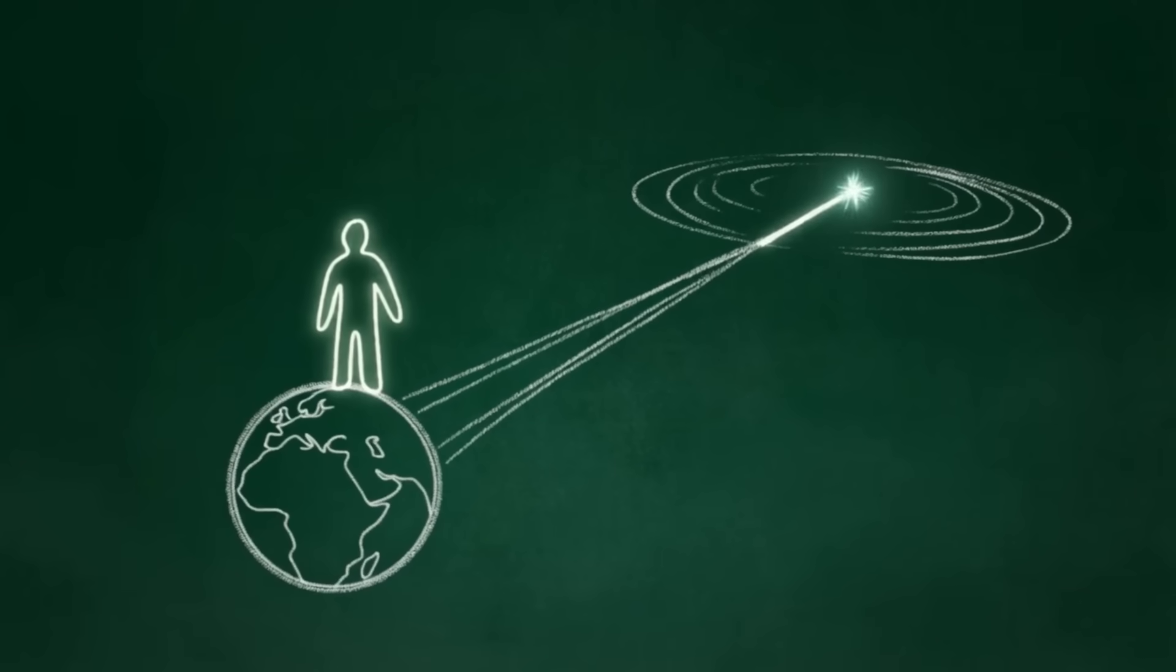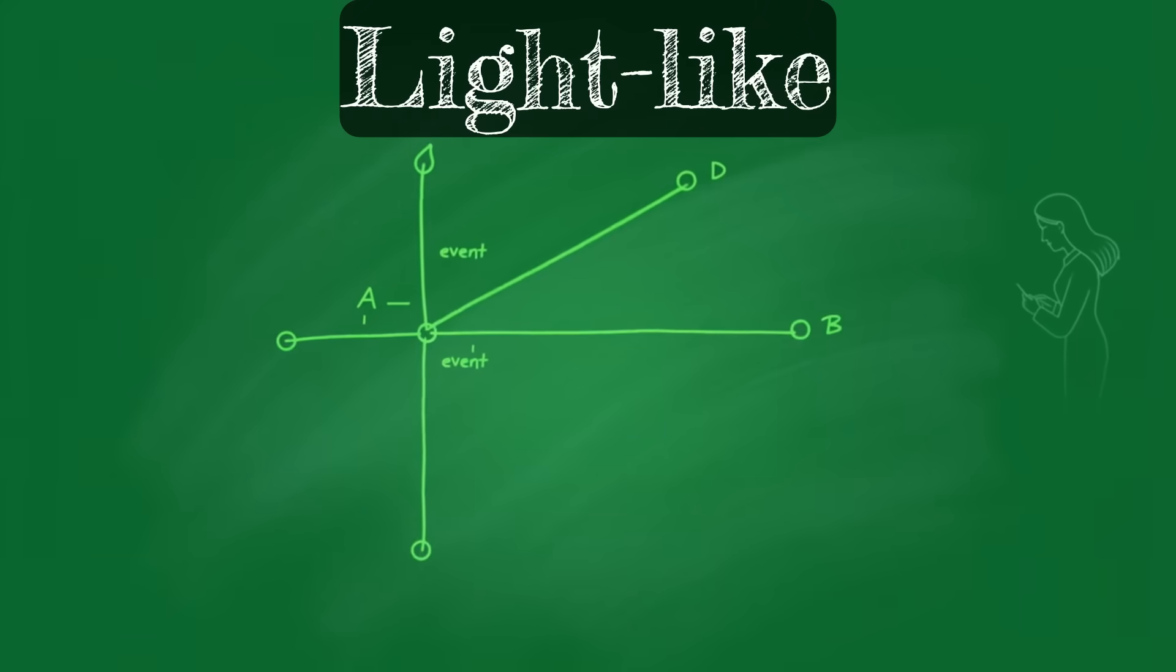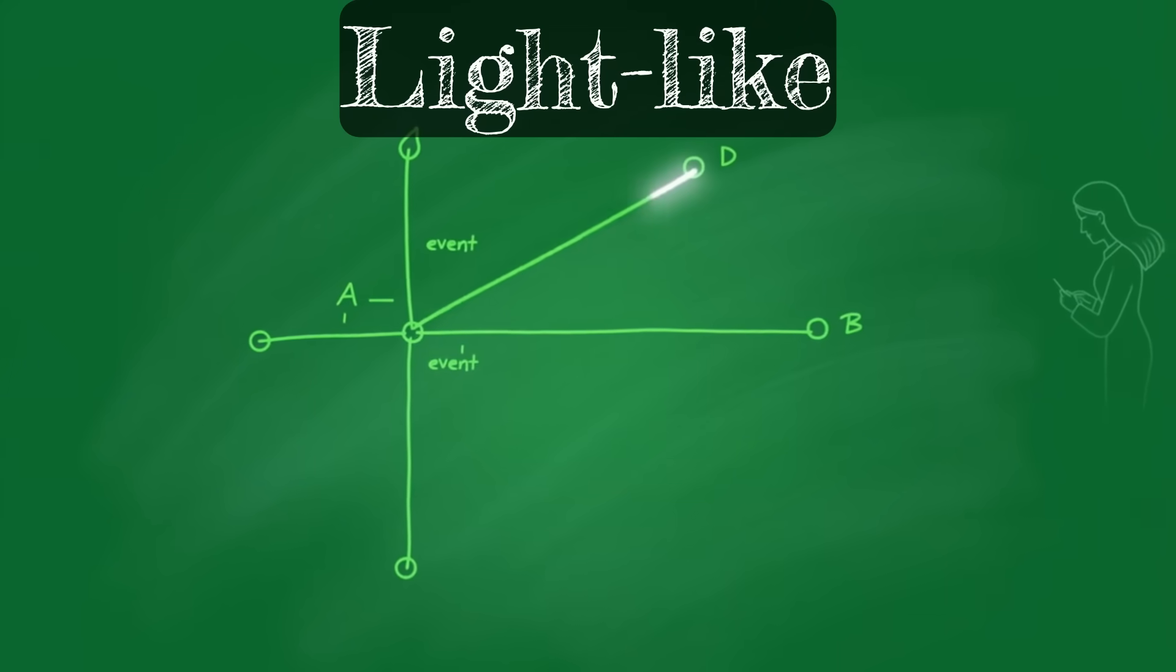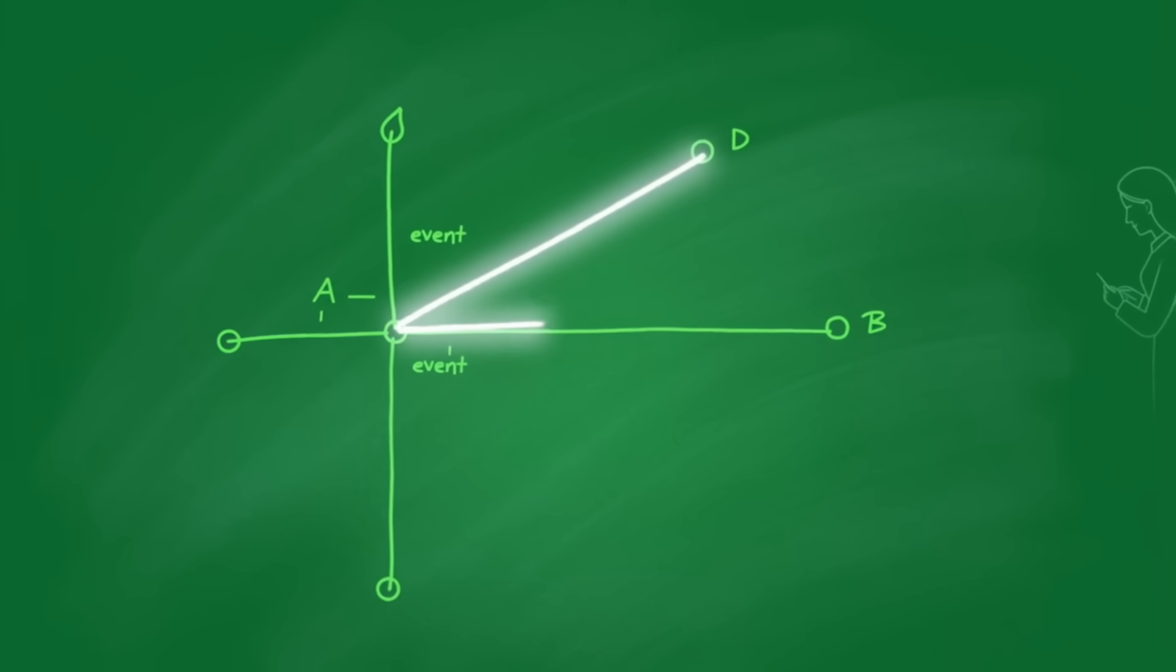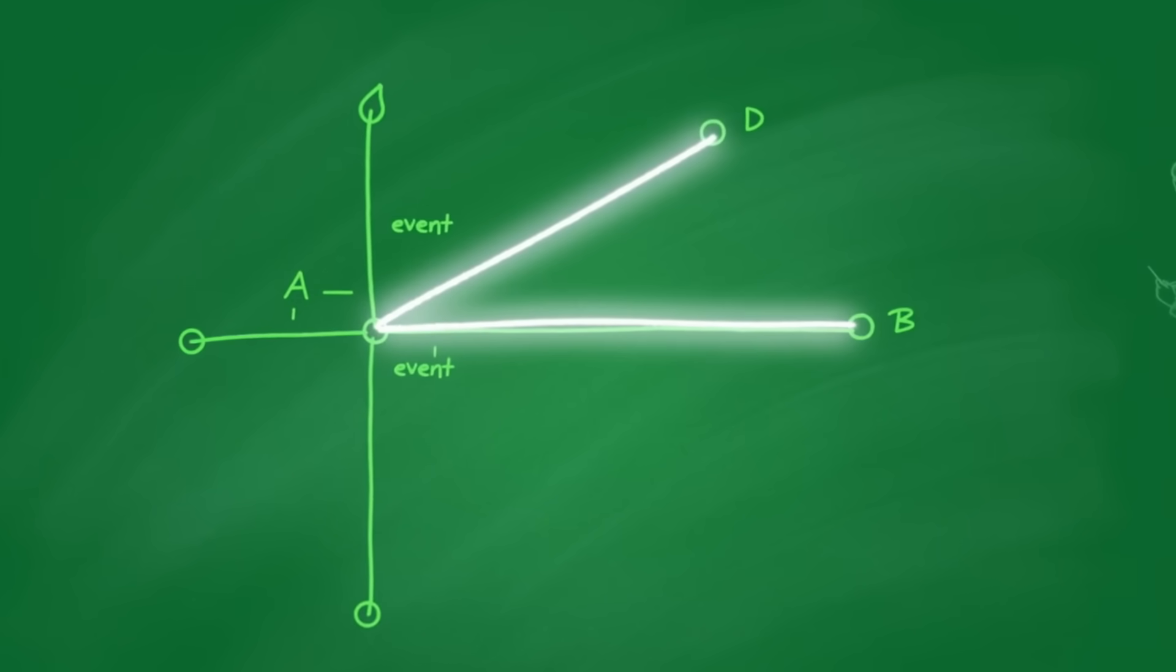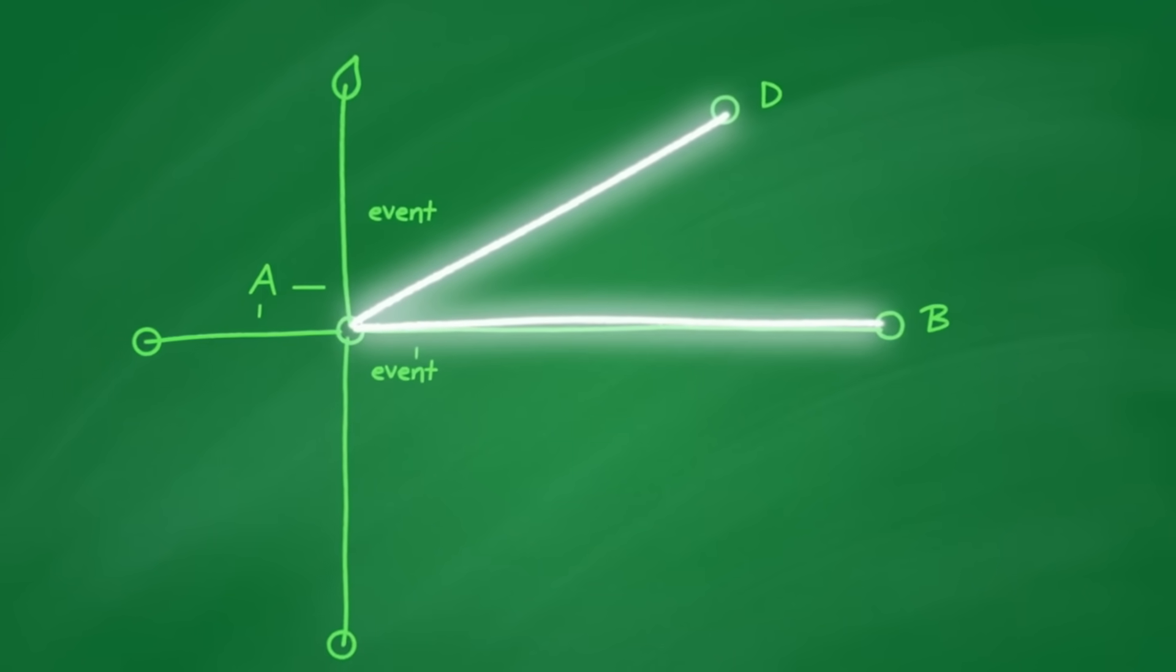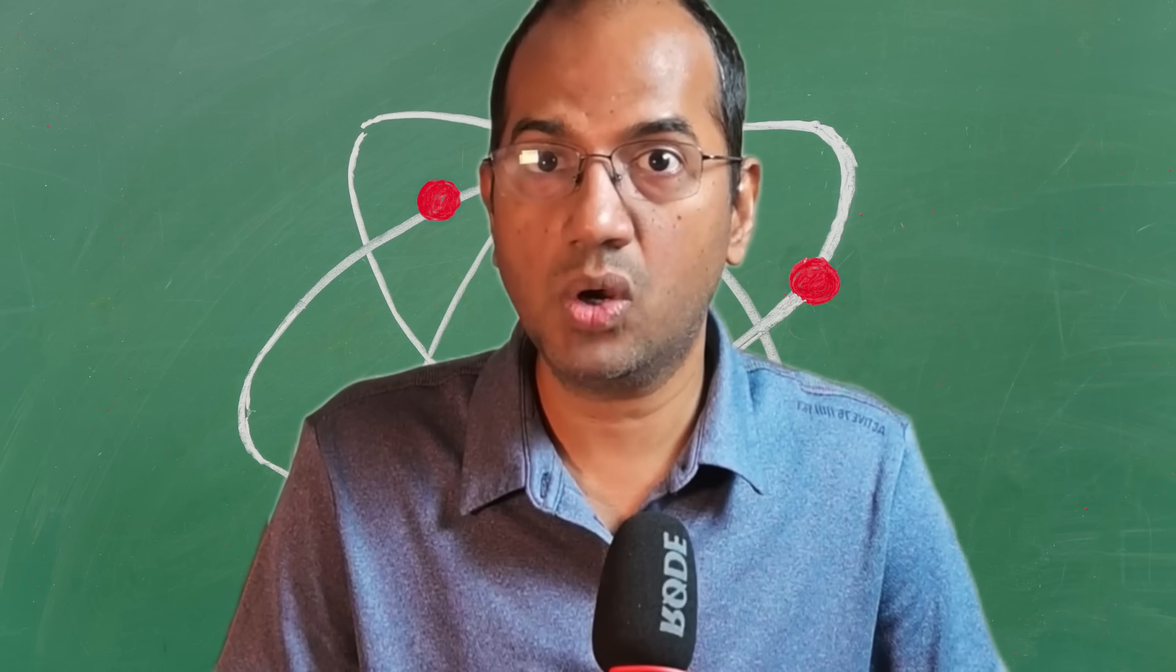But the path a photon takes is special. It's called a light-like or null interval. For any path light takes, the spacetime interval is always mathematically zero. This is the real physics behind the statement that for light, there is no space and no time. Its entire existence from emission to absorption traces a path of zero length on the fabric of reality.